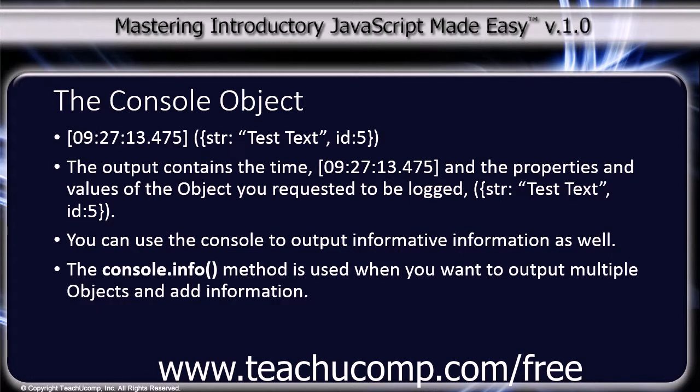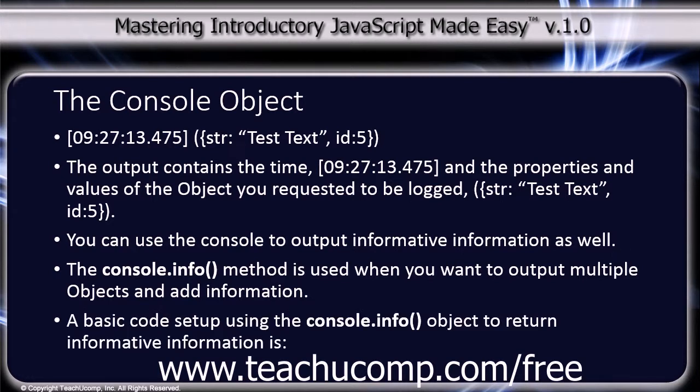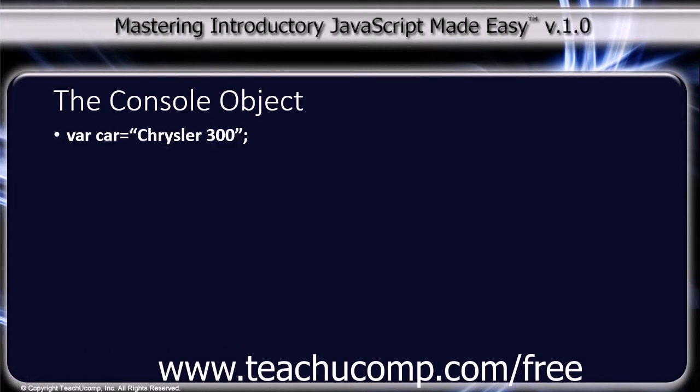You can use the console to output informative information as well. The console.info method is used when you want to output multiple objects and add information. A basic code setup using the console.info object would look like this.